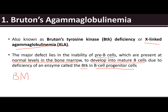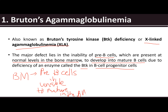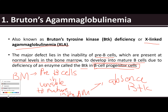In the bone marrow you would find pre-B cells. These pre-B cells are unable to mature in the bone marrow due to the absence of the enzyme BTK, found in B cell progenitor cells. In Bruton's agammaglobulinemia, the pre-B cell cannot mature into a mature B cell due to the absence of the BTK enzyme found in B cell progenitor cells.